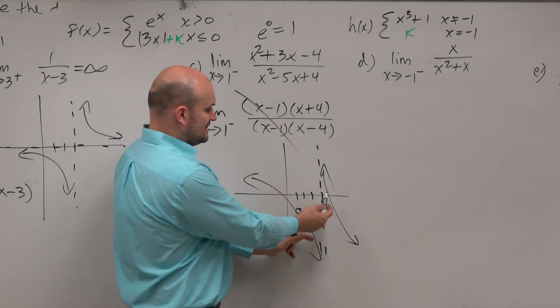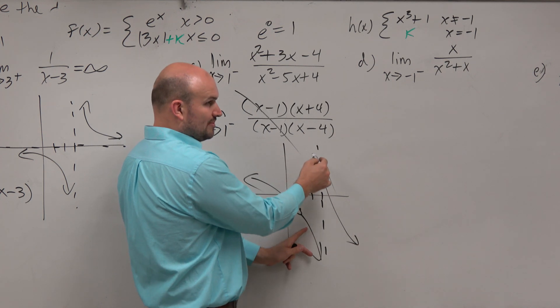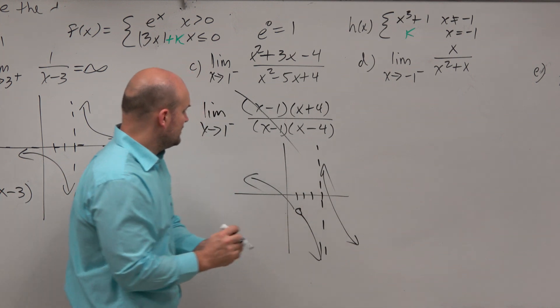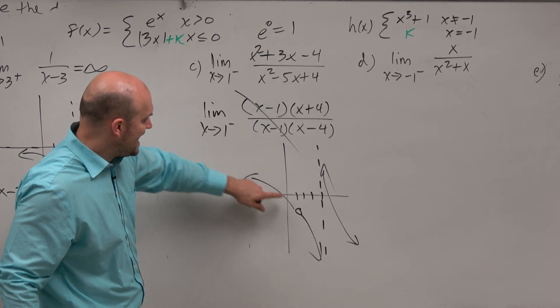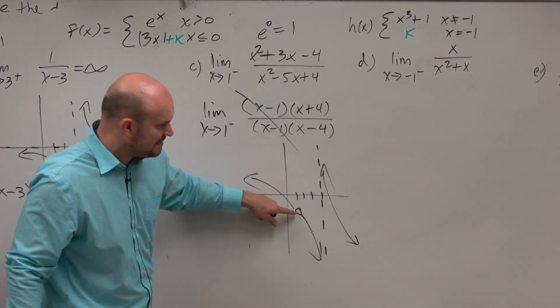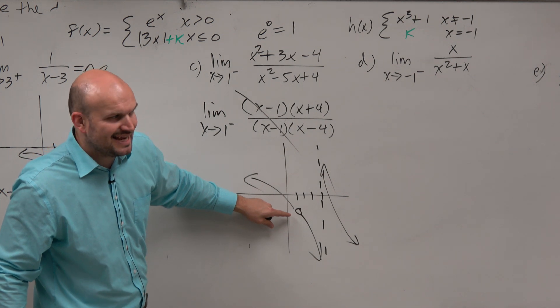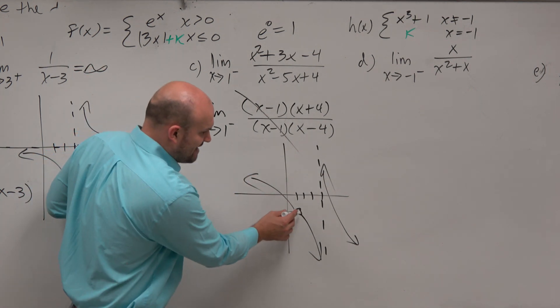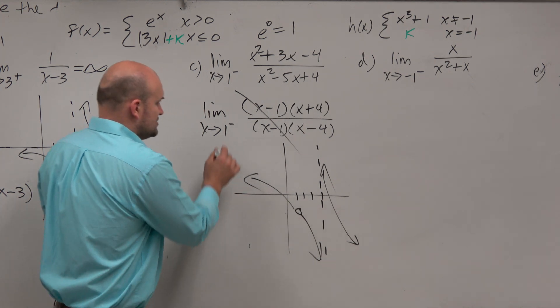If I was testing the left or right hand limit at the asymptote, I want to know, is it going up or is it going down? That's why looking at the graph would be helpful. However, I am checking the limit at 1. I'm checking the left hand limit at 1. I don't really care what the limit, all I know is, I just need to figure out what that value is of the function.